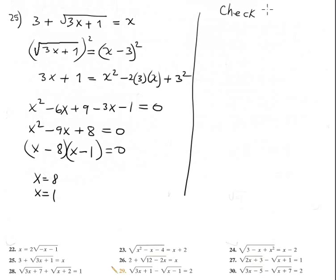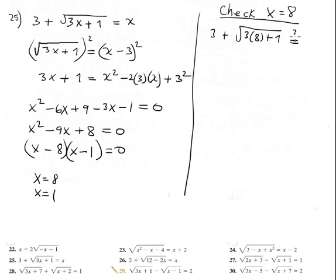Checking x equals 8: plug in — 3 plus the square root of 3 times 8 plus 1 should equal 8. That's 3 plus the square root of 25, which is 3 plus 5, equals 8. True — x equals 8 is correct.